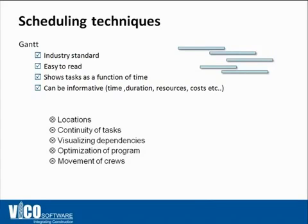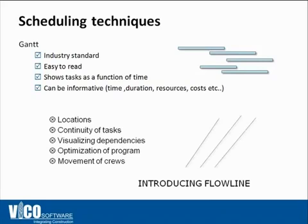Gantt charts don't show locations. For example, they show locations only in the name of the task if you include it, or if you create your own location breakdown structure coding system and include it as a field in your Gantt chart schedule. So it doesn't show continuity of tasks, and it does not allow you to visualize dependencies and optimize the movement of crews.